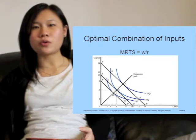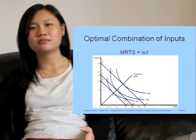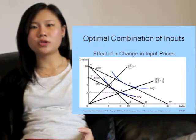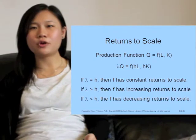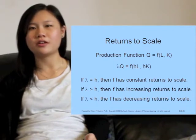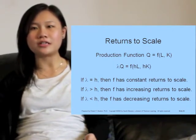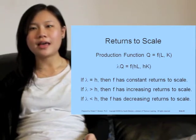The slope of the isoquant — the marginal rate of technical substitution of labor for capital — equals the slope of the isocost line, or the ratio of input prices. This figure describes the optimal input combination for input substitution in production. Returns to scale refers to the degree by which output changes as a result of a given change in the quantity of all inputs used in production. For a given proportionate increase in all inputs, it is constant returns to scale if output increases in the same proportion, increasing returns to scale if output increases by a greater proportion, and decreasing returns to scale if output increases by a smaller proportion.